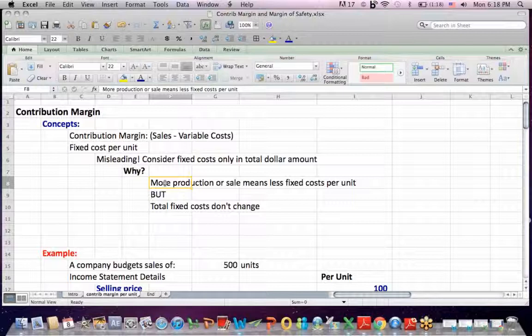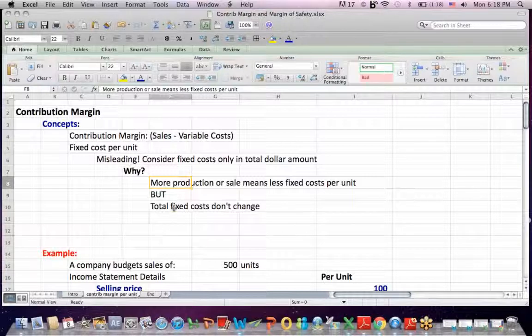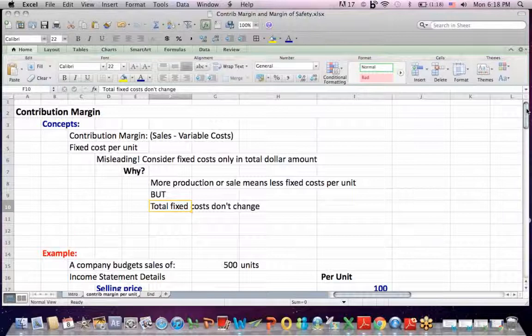But if you're looking at it on a per unit basis, the more you produce or sell means a lower fixed cost per unit. It creates the illusion that your fixed costs are going down. When in reality, in terms of a total dollar amount, fixed costs don't change.